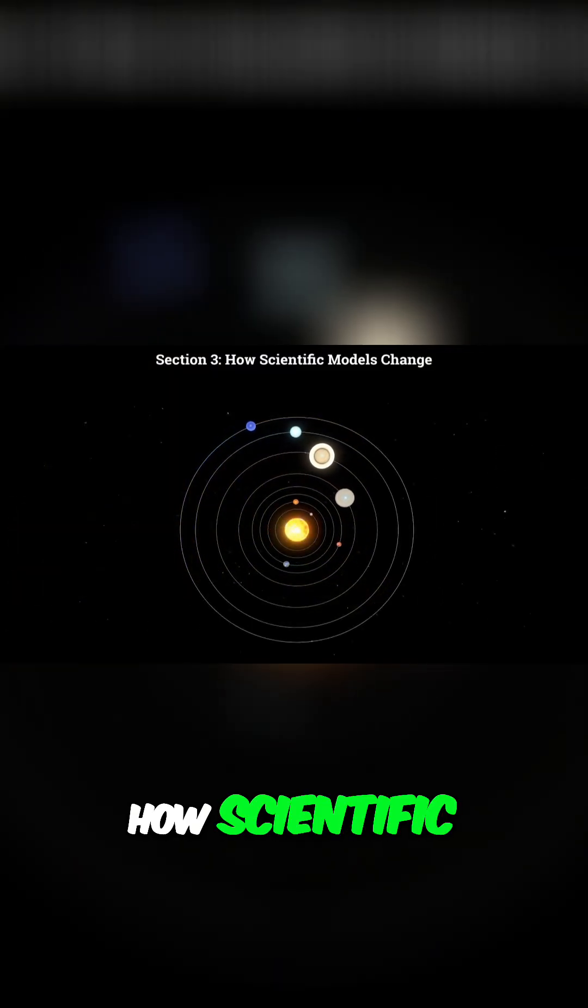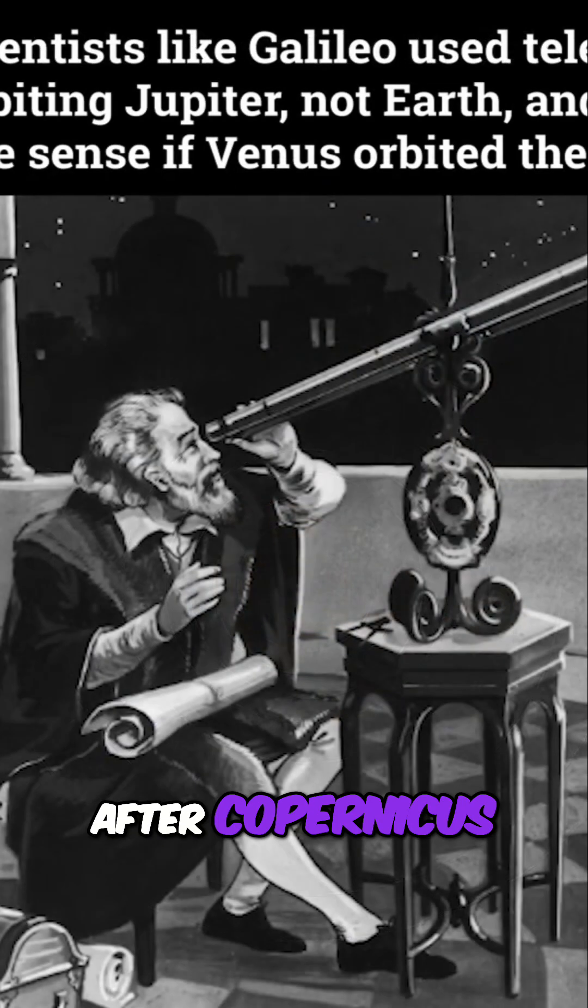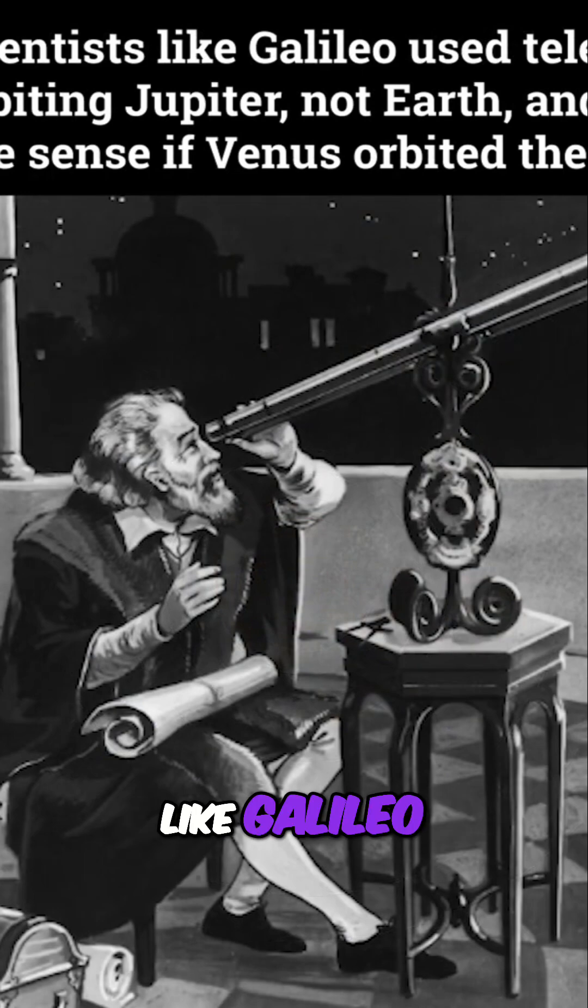Section 3: How Scientific Models Change. After Copernicus, more scientists like Galileo used telescopes to gather evidence.